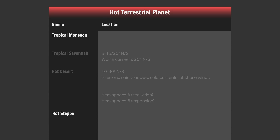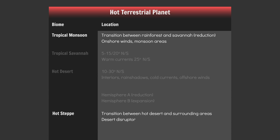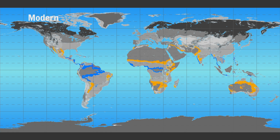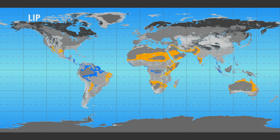Anyways, the transition zones are again very similar to present day Earth, albeit the monsoon zone is reduced somewhat, and as just discussed, hot deserts also act as desert disruptors.